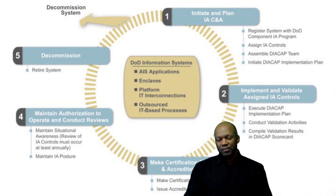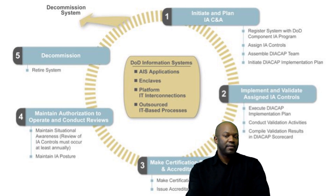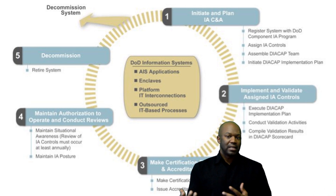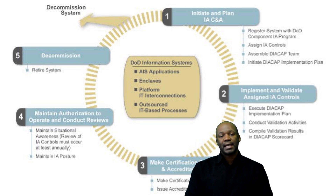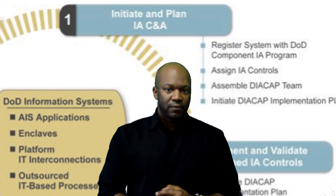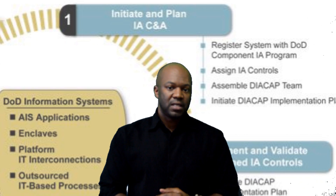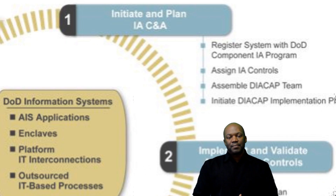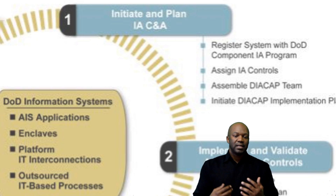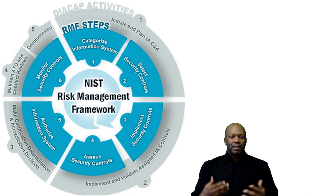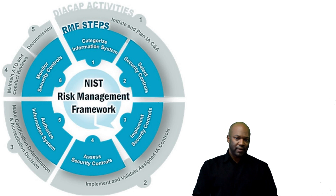Now, if you know DICAP or are familiar with it at all, you'll find Risk Management Framework very, very similar. As a matter of fact, only the first two steps are really different, and that's because of the reference documents that they pull from. Let's start off with DICAP step one of this five-step process, which is initiate and plan for a CNA — Certification and Accreditation. In that step, you pretty much do the same things that you do in categorize the system and select the security controls, which matches up and correlates with the Risk Management Framework process.